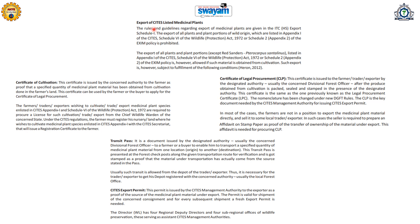For export of CITES-listed medicinal plants — red-listed or endangered plants that are threatened with extinction — exporters must follow certain provisions. They must obtain a certificate of legal procurement for medicinal plants and their parts, and a certificate of cultivation if they are involved in cultivation. These formats are provided and permits can be obtained from local agriculture and forest authorities. A transit pass is also issued by the concerned Divisional Forest Officer to farmers or buyers.